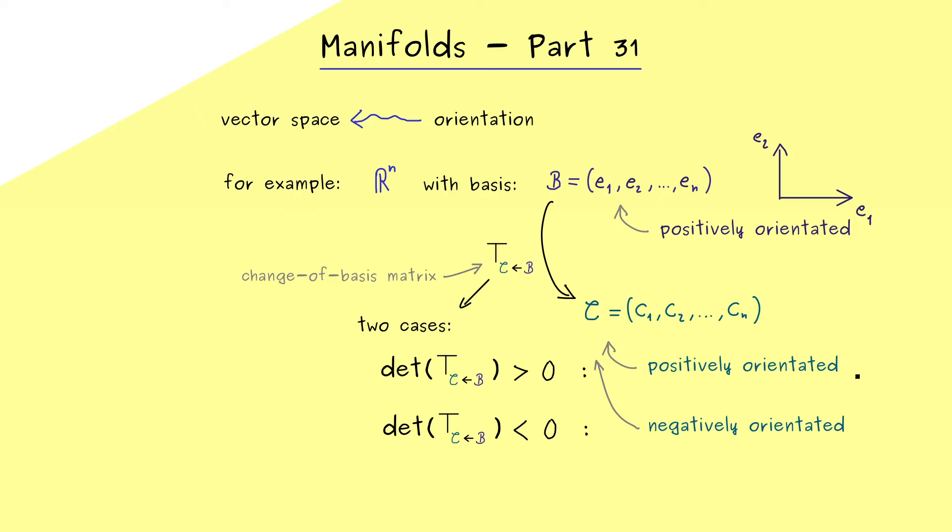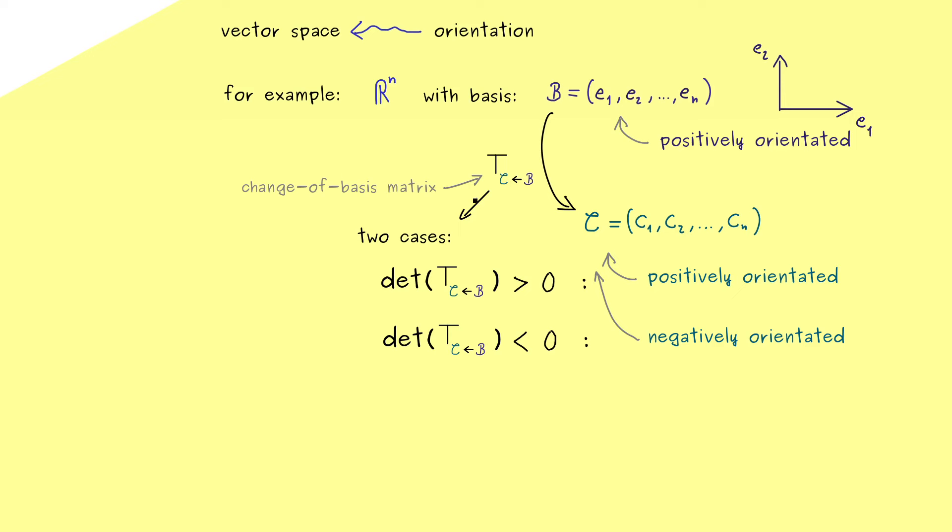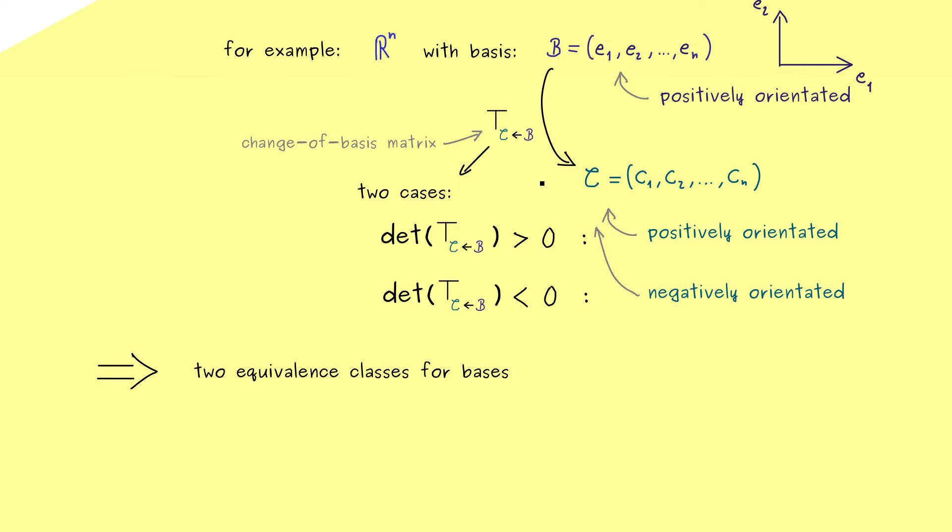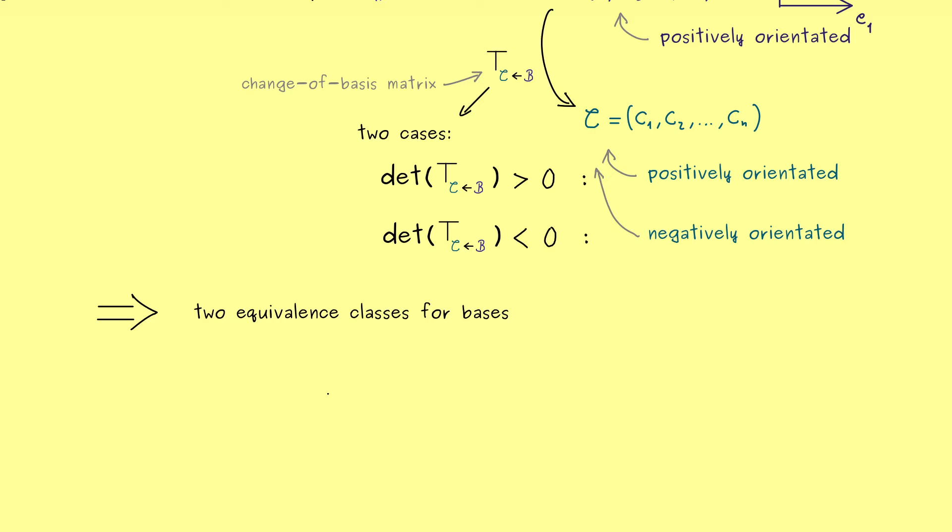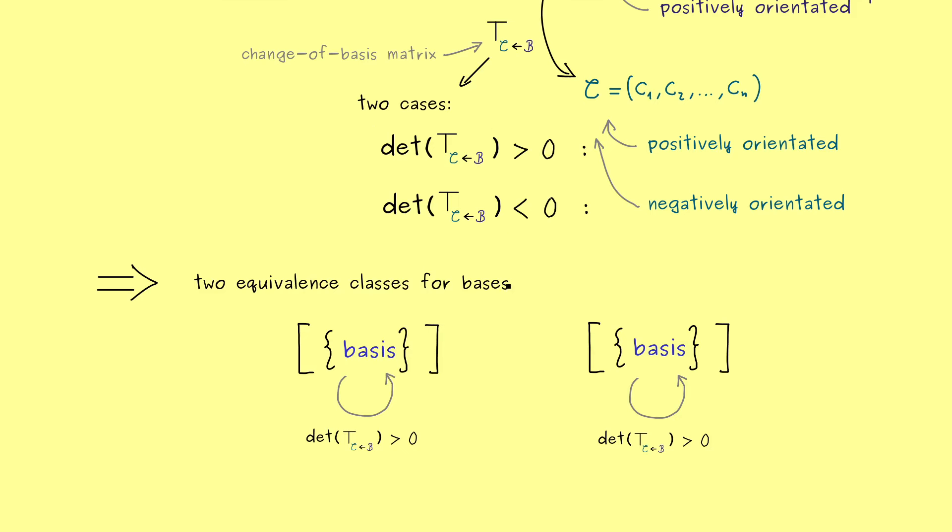This is the change from a right-handed to a left-handed coordinate system. But these are just names. The important thing is that we have exactly two choices. In mathematical terms, we have two equivalence classes for bases. The equivalence relation is given by the sign of the determinant of the transition matrix. A basis of R^n is either in one box or the other. Hence, choosing an orientation for R^n is just fixing one of the two boxes. Two bases are equivalent if the change of basis matrix has a positive determinant. This defines an equivalence relation, and we get two equivalence classes.